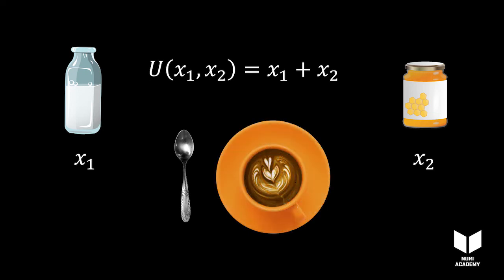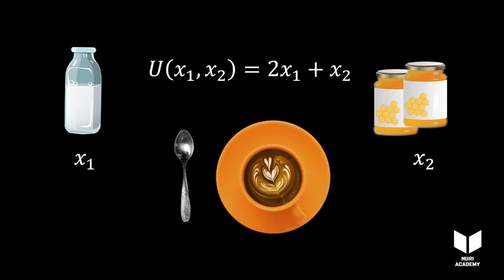Let's consider a different consumer with different taste. For every ounce of milk added to her cup of coffee, she's prepared to forgo two ounces of honey. Then her coffee utility function is 2X1 plus X2.